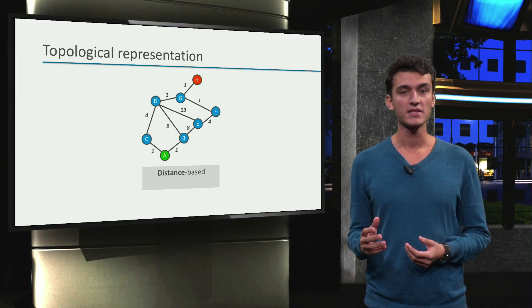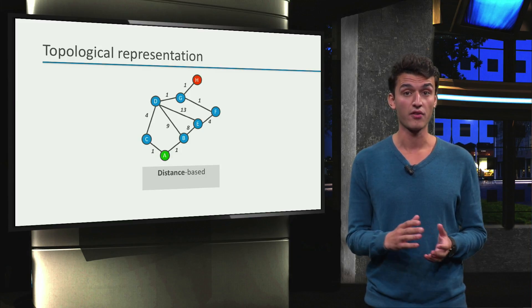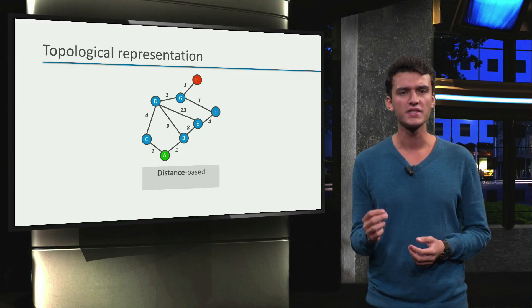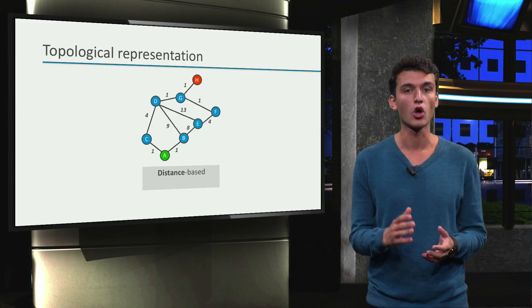So each path now has a different distance and therefore a different cost. We want to optimize for the shortest distance, which corresponds to the lowest cost.